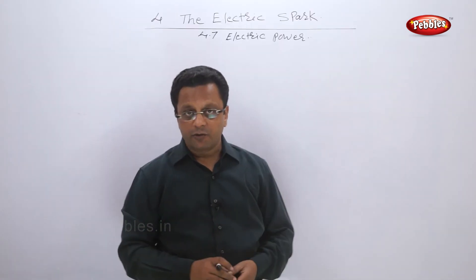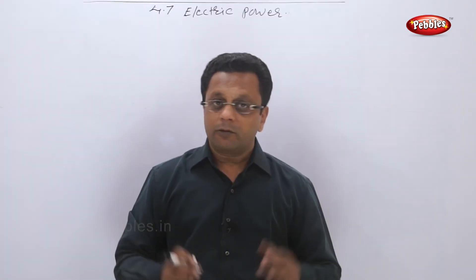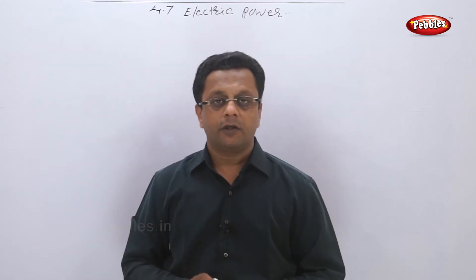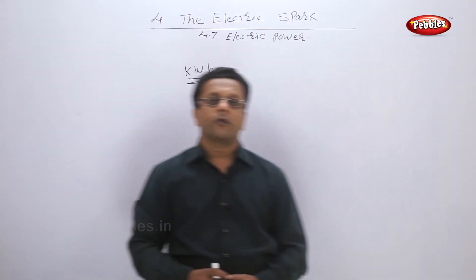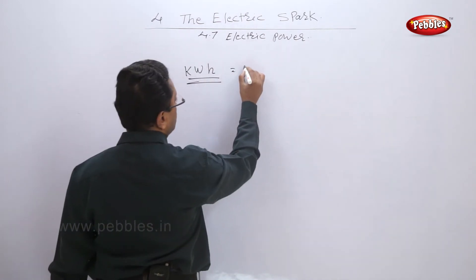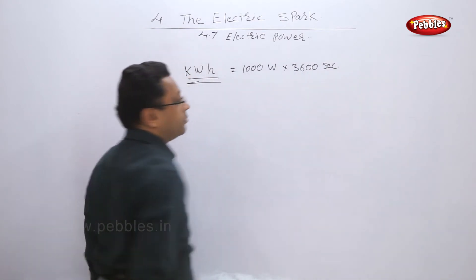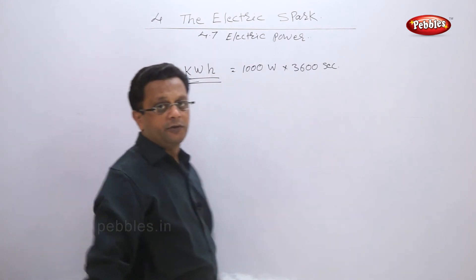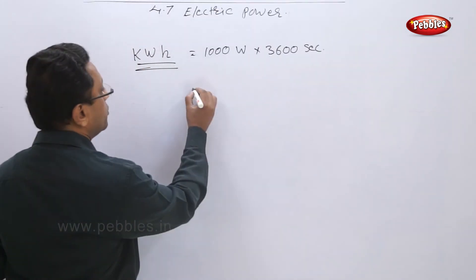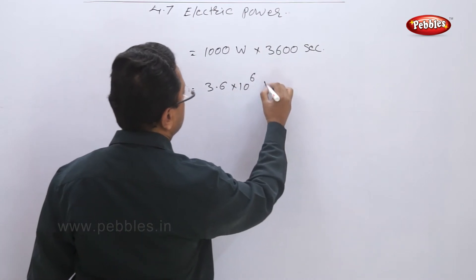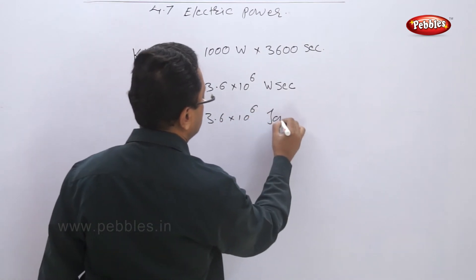The commercial unit for electrical energy is the kilowatt hour (kWh). One kilowatt hour equals 1000 watts multiplied by 3600 seconds, because hour is not an SI unit — seconds are. This gives 3.6 into 10 raised to 6 watt-seconds, or 3.6 into 10 raised to 6 joules.